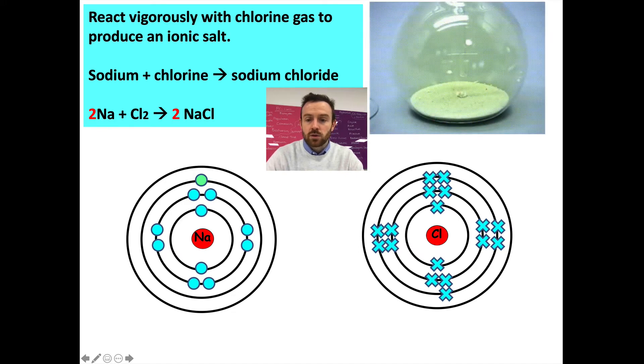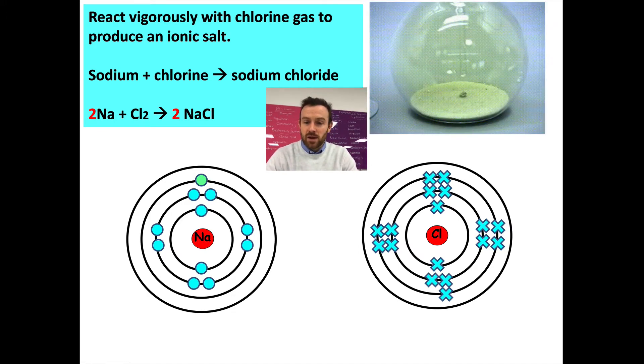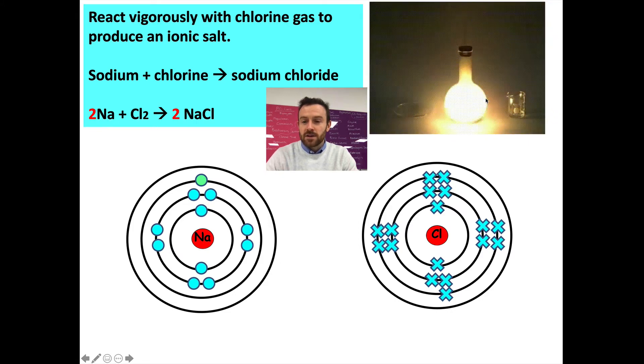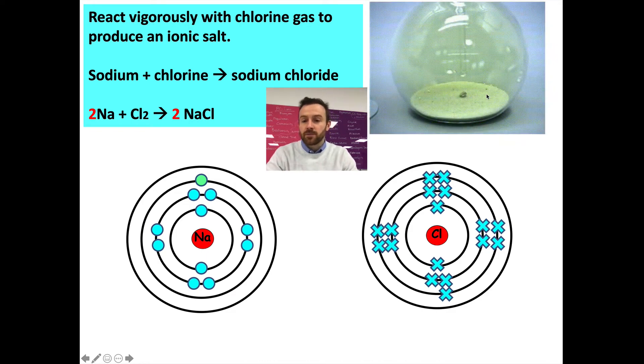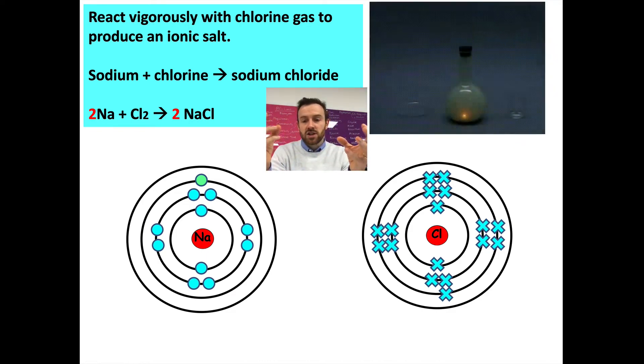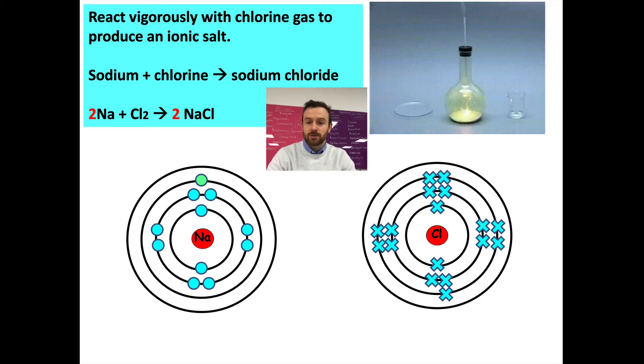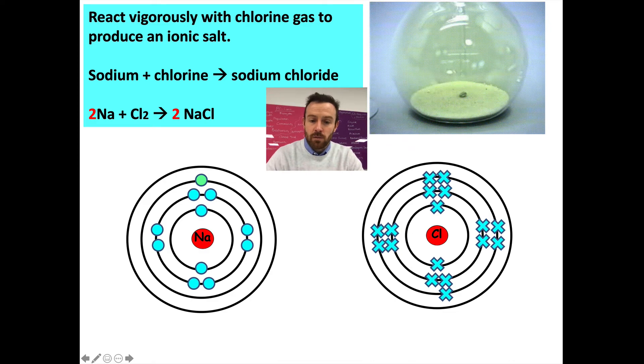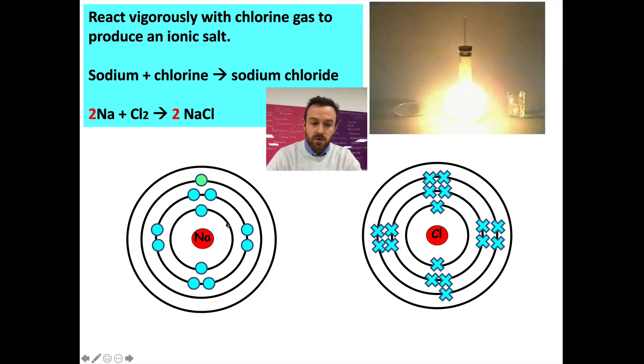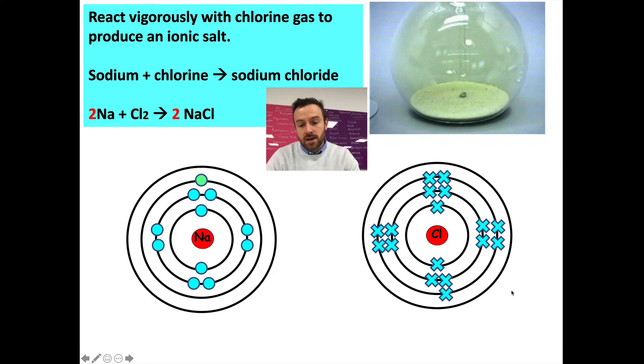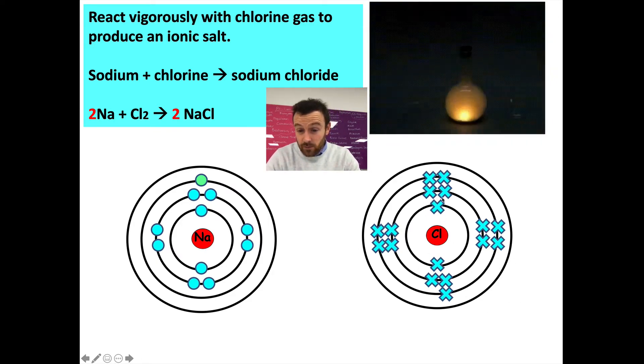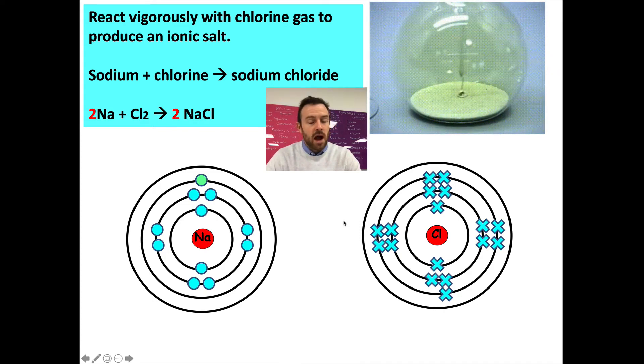So sodium plus chlorine goes to sodium chloride. Sodium chloride is just table salt. So 2Na, you probably have it solid plus chlorine gas goes to 2 lots of sodium chloride. That's a balanced chemical equation. So that reaction would look a bit like this. So at the beginning here, we can see that the chlorine gas is kind of a pale greenish gas in this kind of gas jar. And the sodium metal is just this little blob down there in the middle. Now to start this chemical reaction, you actually need a tiny little drop of water, which just gives it enough basically activation energy to get going.